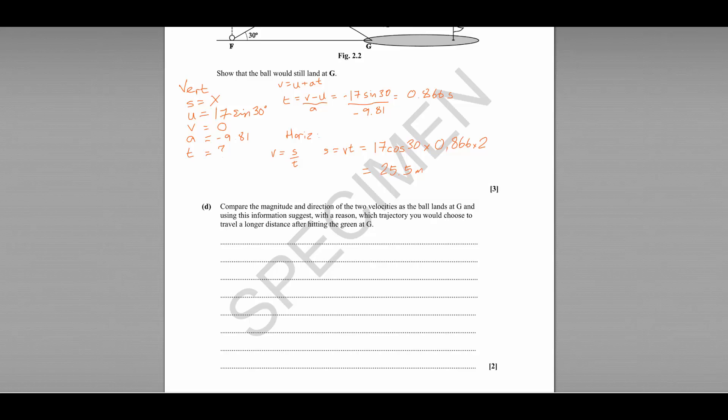And finally, part D asks us to compare the magnitude and direction of the two velocities as the ball lands at G and use this information to suggest which trajectory you would choose to travel a longer distance after hitting the green at G. So we're interested in what's going to happen to the ball after it lands, after it bounces at G. So the first thing to note is that since these trajectories are symmetrical, if both balls left at 17 metres per second, both balls would also be landing with a speed of 17 metres per second. So both balls land with a speed of 17 metres per second, but with different angles.